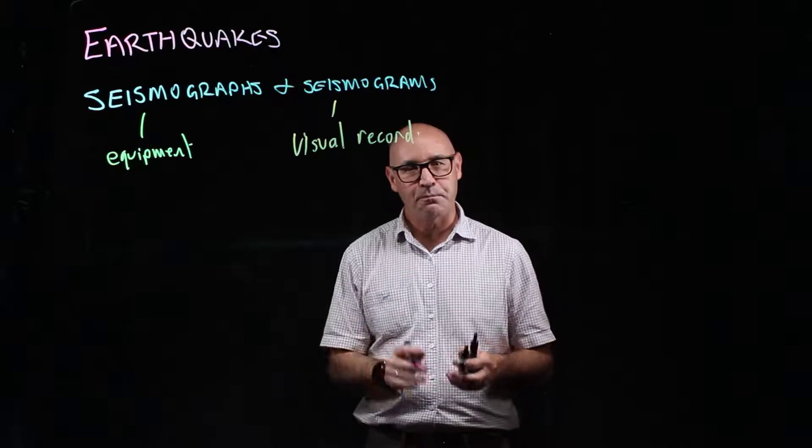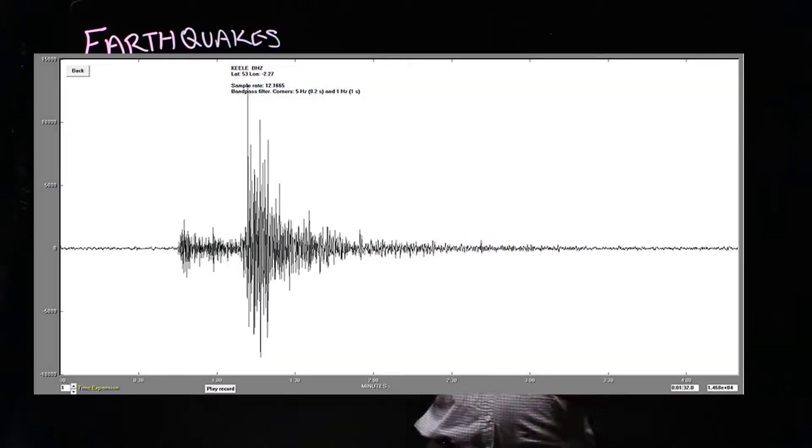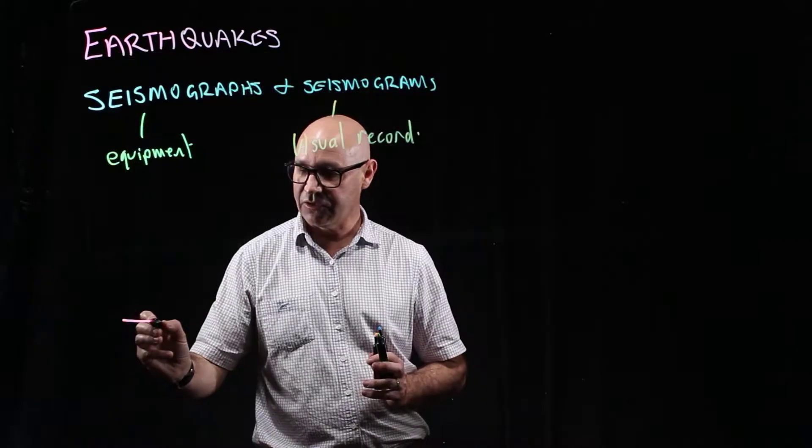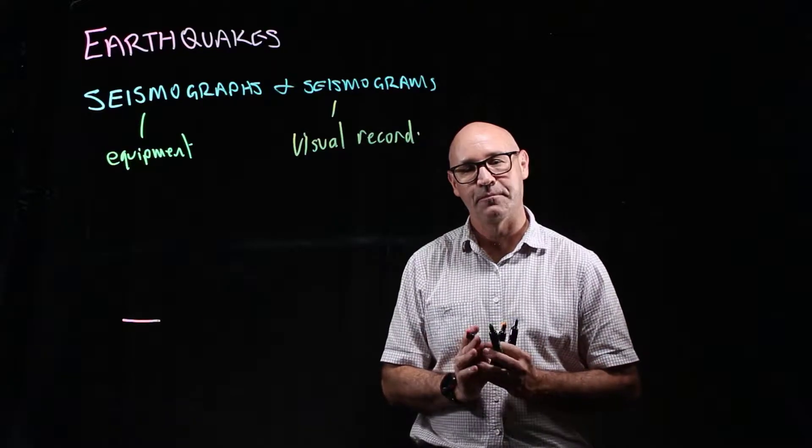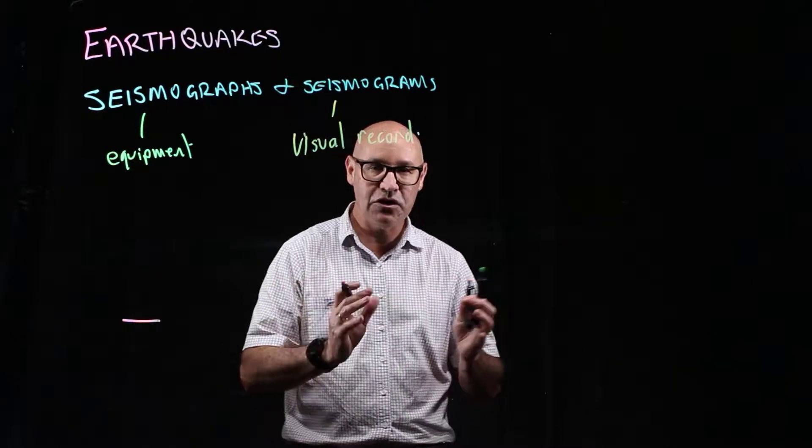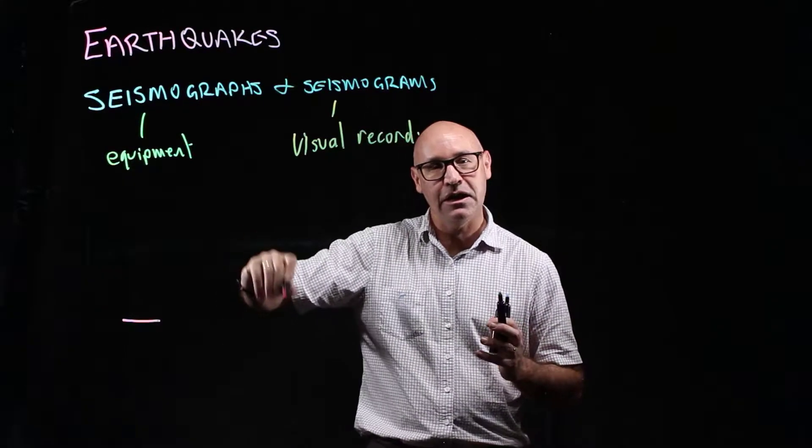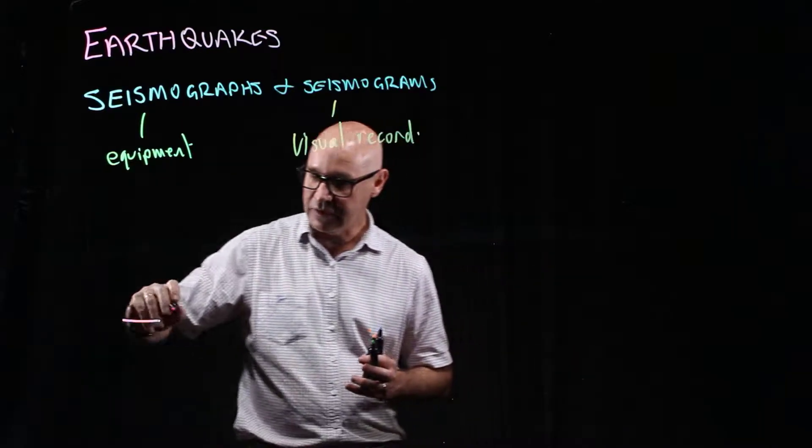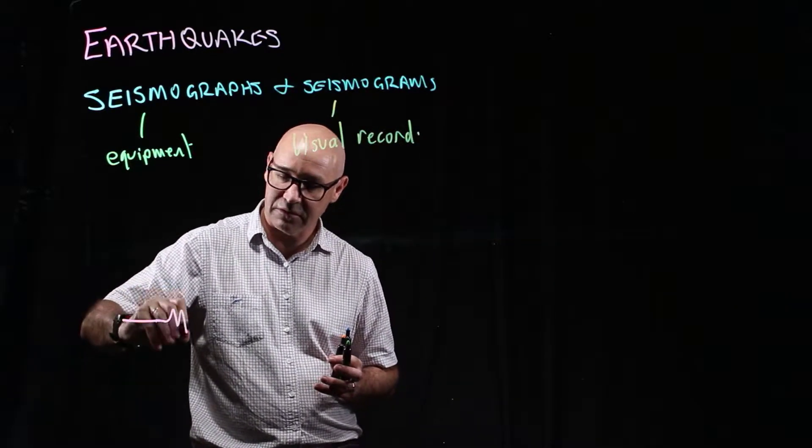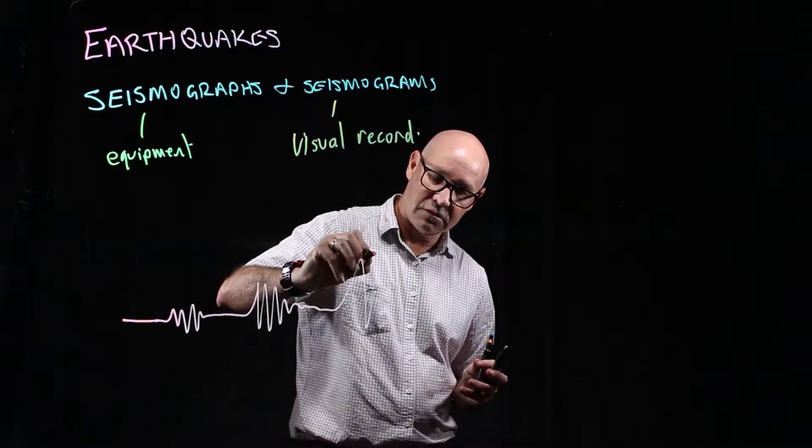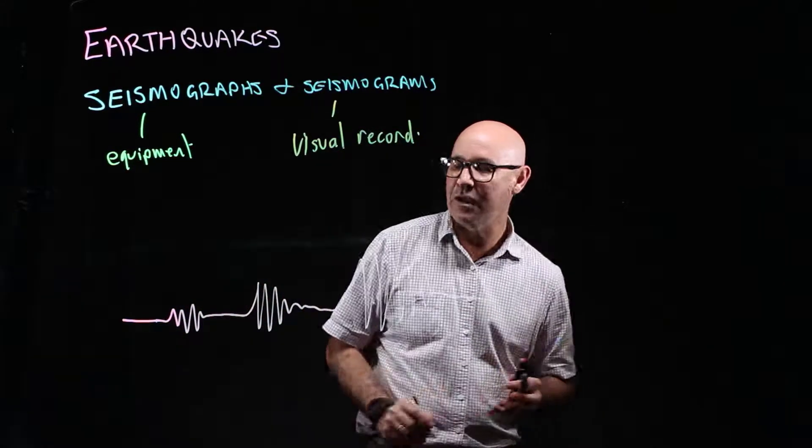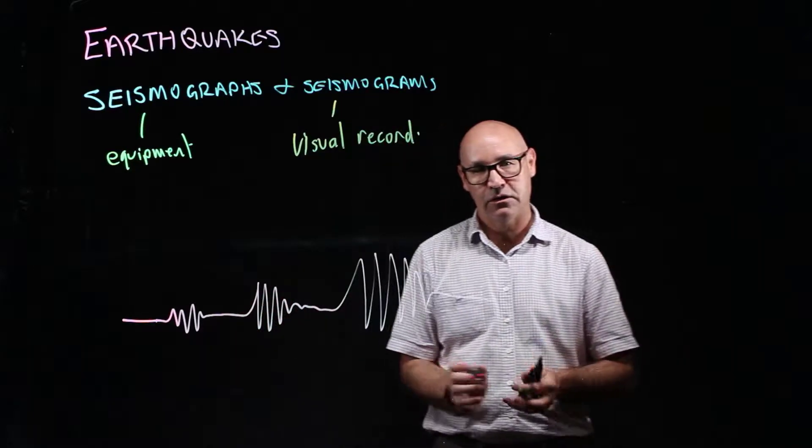Now, you've probably seen what a seismogram looks like. It kind of looks a bit like this. So when there's no seismic activity, there's just a straight line. But when there's the shaking of the Earth, well, it makes the needle move and it makes a trace. So it kind of looks a bit like this. And that might be what an earthquake looks like.